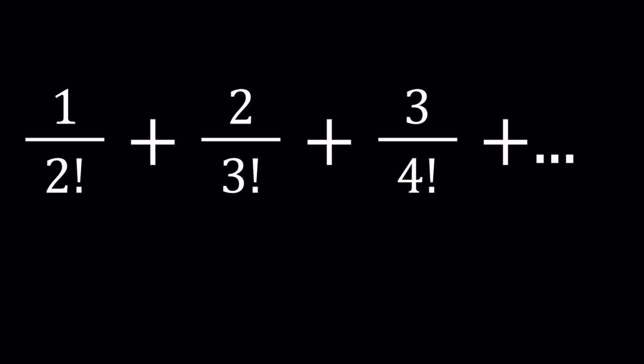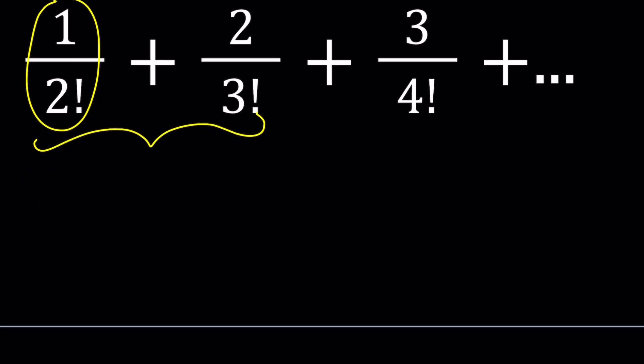So whenever you have a problem with factorials, you probably want to break down something. Let's take a look at the first few terms of this series. By the way, when I say the terms for the series, I'm talking about a sum, not a sequence. The first term would be 1 over 2 factorial, the second term would be the sum of the first two terms, and so on.